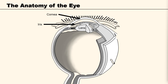We have a lens. The lens is a transparent biconvex structure. Along with the cornea, aqueous humour and the vitreous humour, it refracts the light, focusing it onto the retina. The adjustment of the lens is known as accommodation.